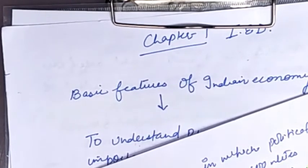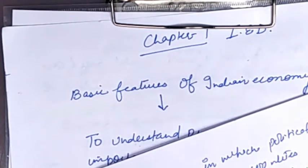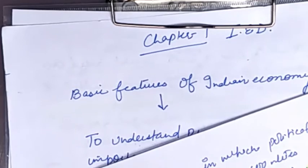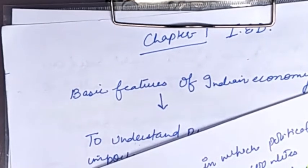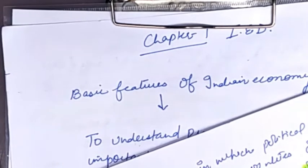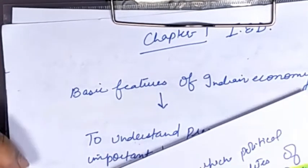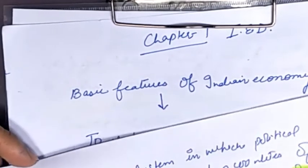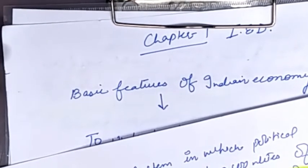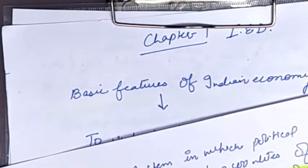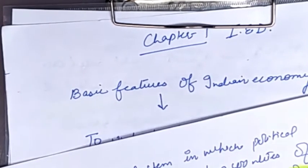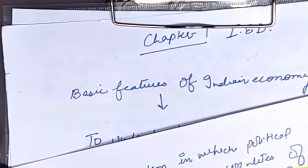Before the Britishers came, India was a self-independent economy. I am not saying it was a developed economy, but definitely India was an independent economy. The main feature of occupation was agriculture — 85% of the population was involved in agriculture. Still, India's condition was better: it was self-independent in the production of food grains. People were happy because whatever they produced was for themselves or for sale in the market, and they were able to meet their requirements.